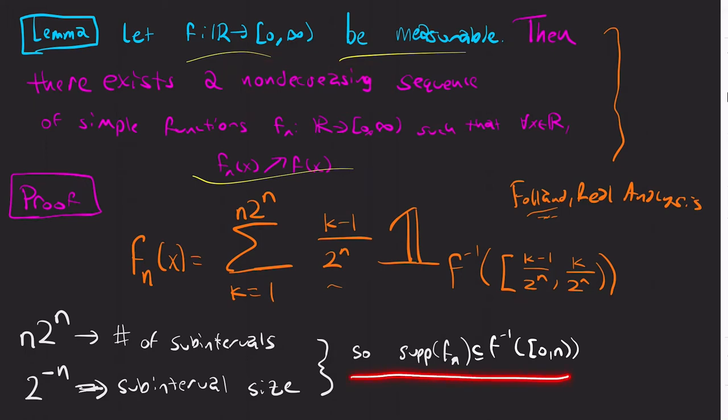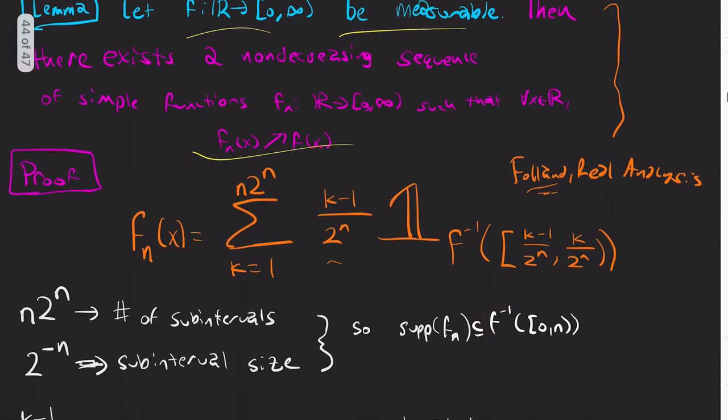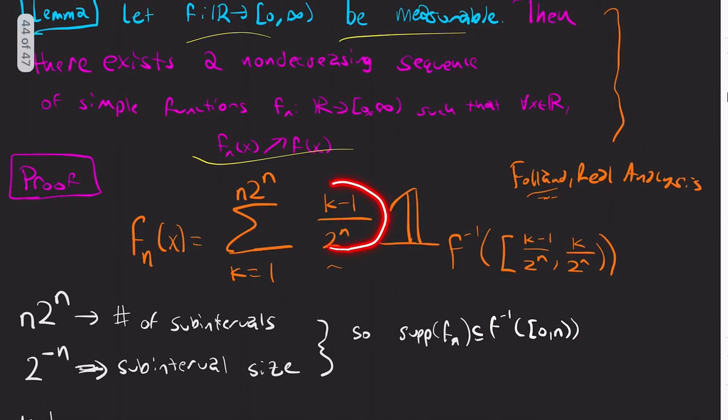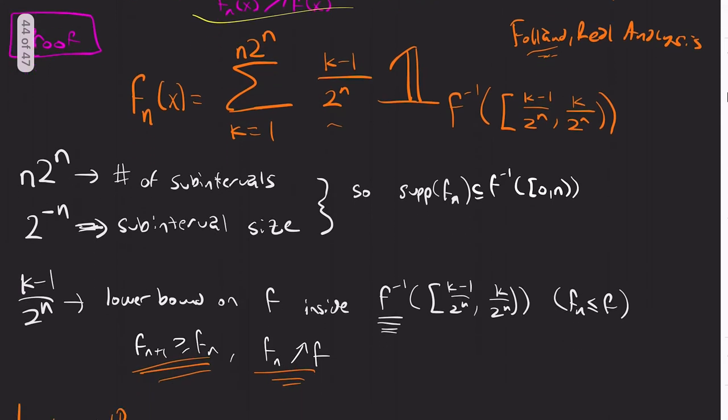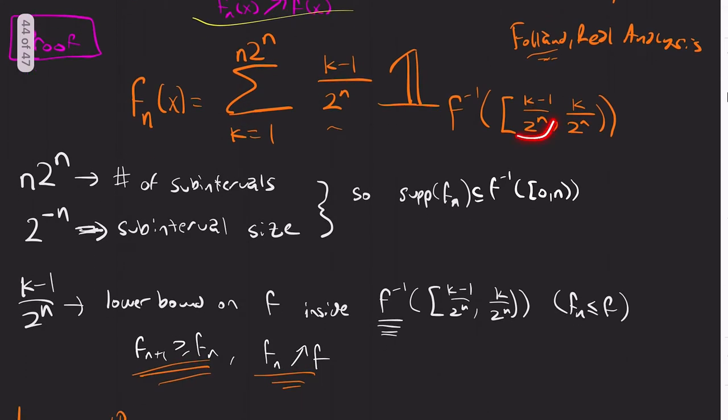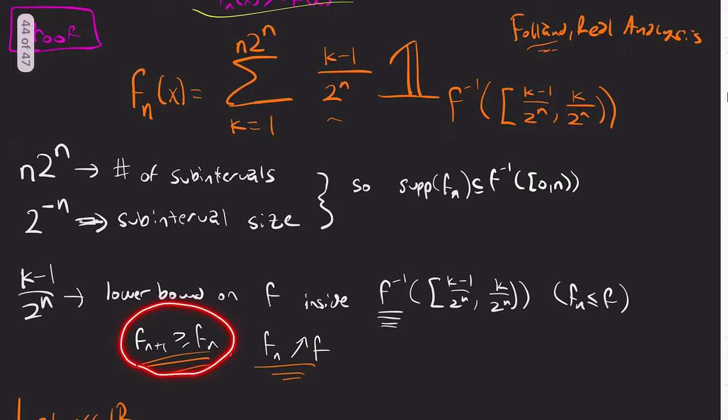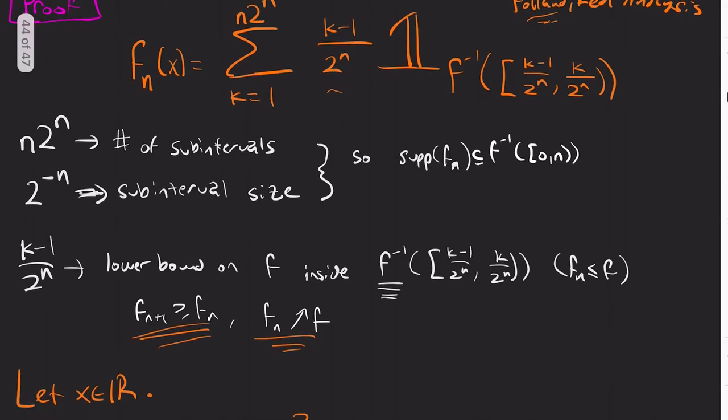So the support of f_n is contained in the pre-image of 0 to n, is what's going on there. And then there's this value. Why did I pick that value? Well, this is a lower bound on what f of x is in this set. So that's also going to help me with showing that it's increasing and that f_n does in fact converge to f. So that particular choice is important.